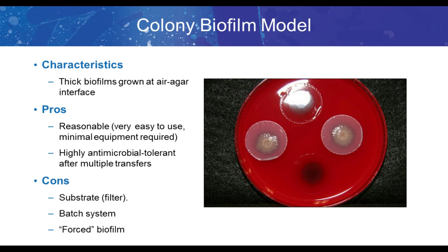The colony biofilm model is one of the simplest models. The biofilm is grown on a microporous membrane — usually a 0.2 micron pore size — on top of an agar plate. These membranes with the developing biofilm are transferred to a fresh agar plate every 12 or 24 hours. These develop thick biofilms that are highly antimicrobial tolerant. Cons include a filter membrane substrate, it's a batch system, and I call this a forced biofilm because there's no fluid shear to remove unattached cells. However, this model does capture antimicrobial tolerance.